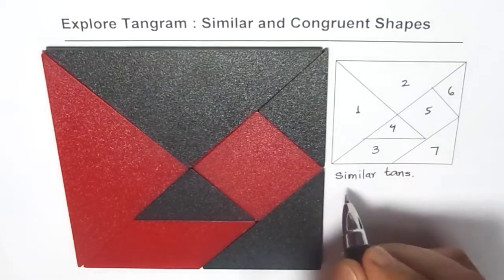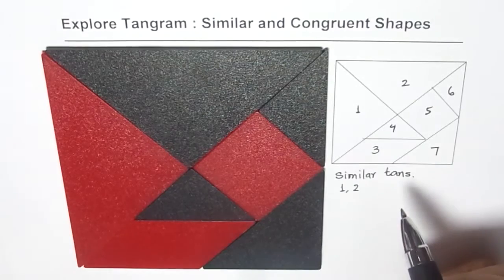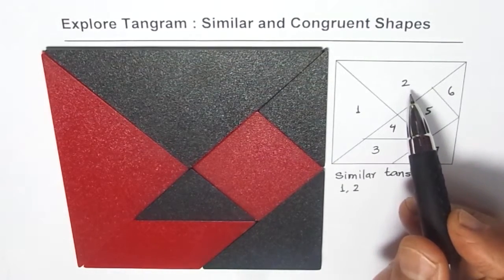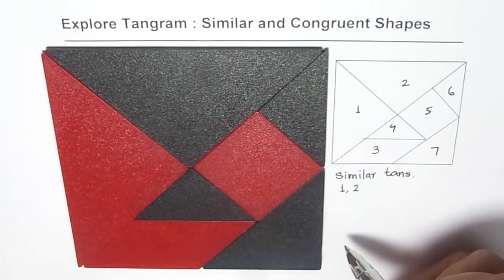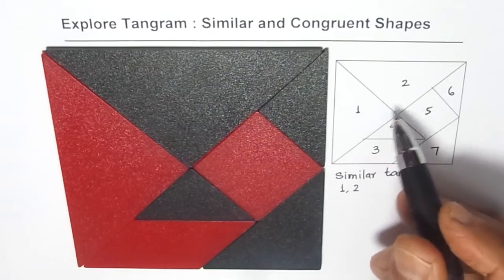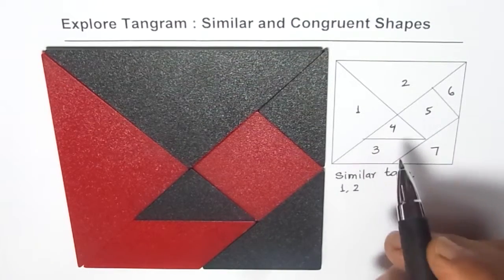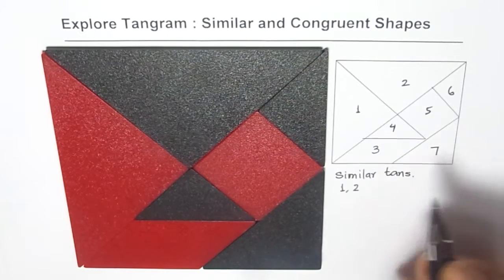For example, one and two are similar — exactly the same size and the same shape. They are similar. When we say similar, size may or may not be the same. If it is the same, even then they are similar. Now, one and two is also similar to four, six and seven.